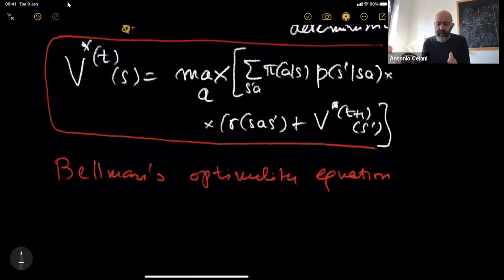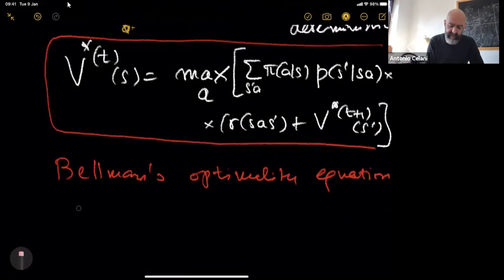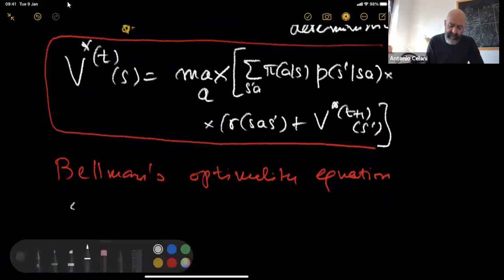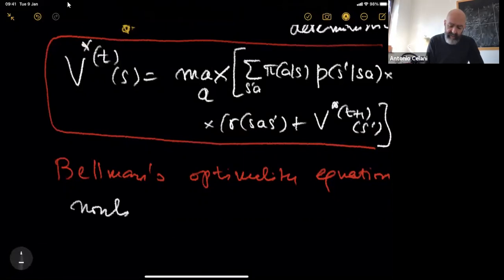As a consequence of this linear optimization, the maximum over all policies is replaced by a maximum directly over actions. This means the optimal policy pi* is deterministic. This equation — V* at time t in state s equals the maximum over actions a of the sum over s' of p(s'|s,a) times the immediate reward plus V*_{t+1}(s') — is called one of the many forms of Bellman's optimality equation. It is a nonlinear recursion relation, where the nonlinearity comes solely from the max operator.